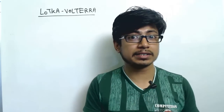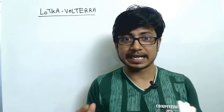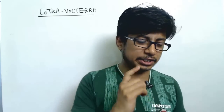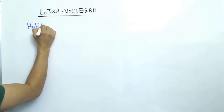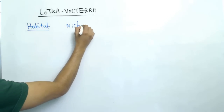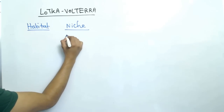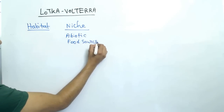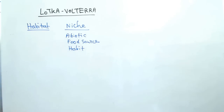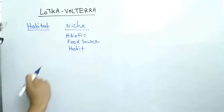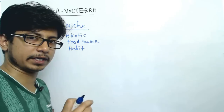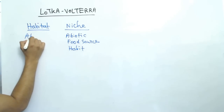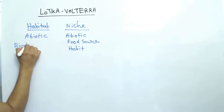Now there is a difference between the term 'habitat' and the term 'ecological niche.' Habitat is the place where an organism lives, defined by the abiotic factors in that place. While ecological niche includes the abiotic factors, the food source, and the habits of the organism all together. So niche is much more specific compared to habitat, which only consists of abiotic factors and biotic elements.